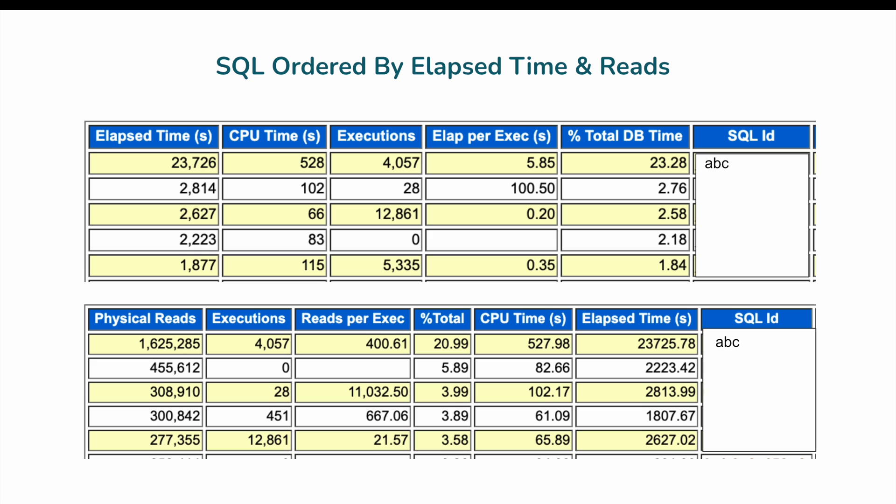That completes the first review of how to read an AWR report when the issue is related to high disk reads or high IO. I hope you liked this session — if you did, please feel free to like, share, and comment. See you soon with another new video. Thank you.